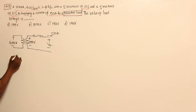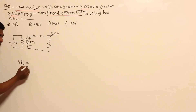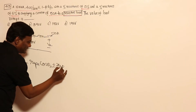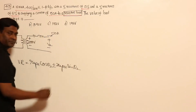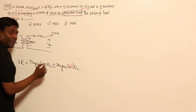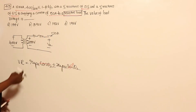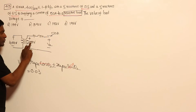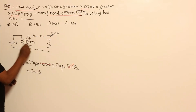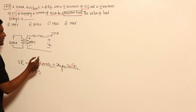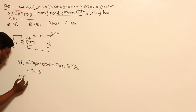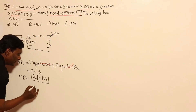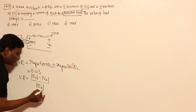At unity power factor, voltage regulation equals Re per unit × cos θ₂ ± Xe per unit × sin θ₂. Since power factor is unity, sin θ₂ = 0 so the Xe term vanishes, and cos θ₂ = 1, leaving just Re per unit, which is 3% or 0.03. Voltage regulation equals (E2 − V2) / 200 since the rated voltage is 200 volts, where E2 is the no-load voltage.